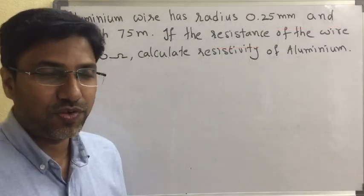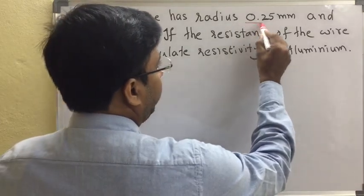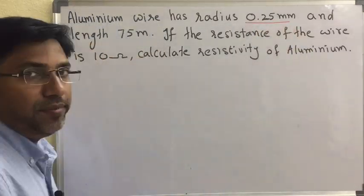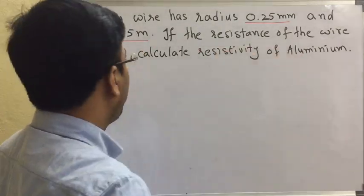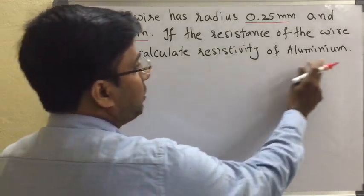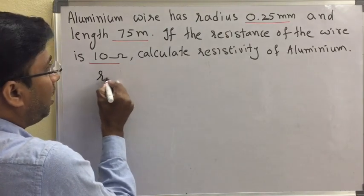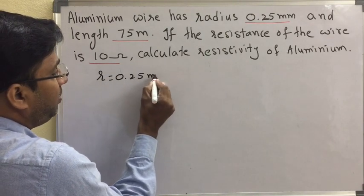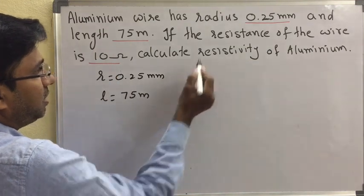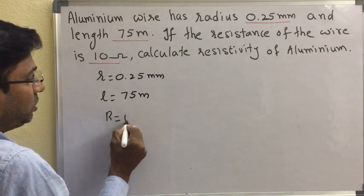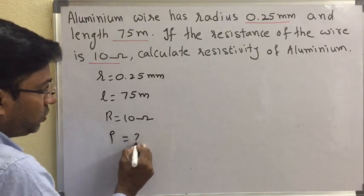This is the answer for this question. Let us see the next question. An aluminium wire has radius 0.25 millimeter and length 75 meters. If the resistance of the wire is 10 ohms, calculate the resistivity of aluminium. Radius r equal to 0.25 millimeter, length L equal to 75 meters, resistance R equal to 10 ohms, and resistivity rho is to be found.